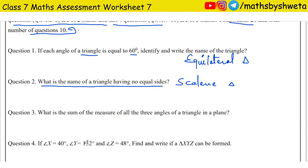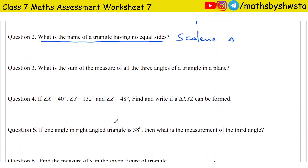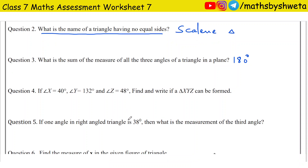Question number 3: What is the sum of the measure of all the 3 angles of a triangle? The sum of the 3 angles of a triangle is 180 degrees. So the question number 1 mark section is complete.